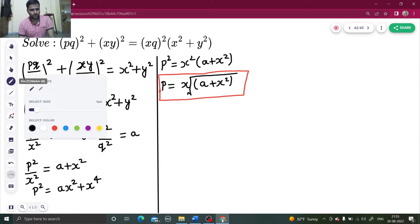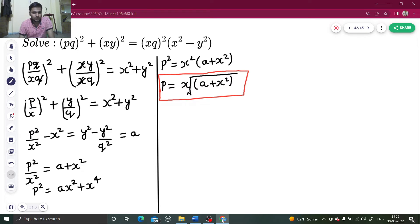Now we will try to do the same for Q. So Y squared, if I take common, 1 minus 1 by Q squared equals A. But this way I will not be getting it, so let me try another approach.